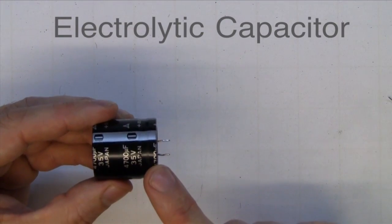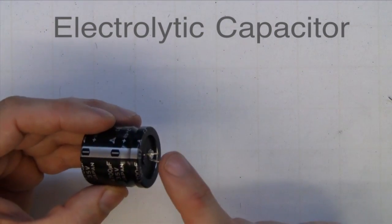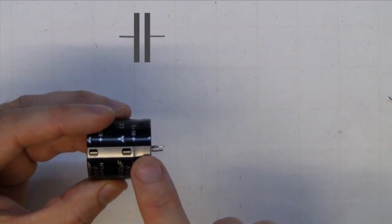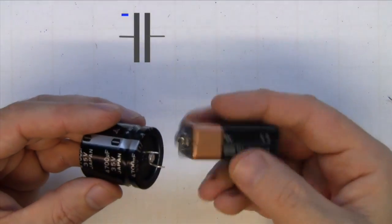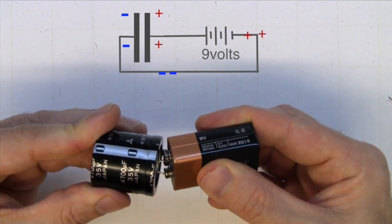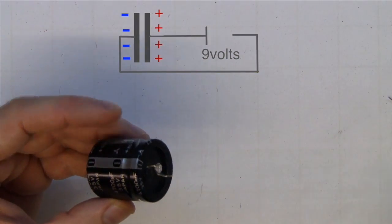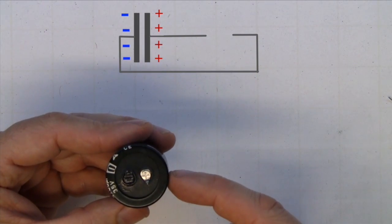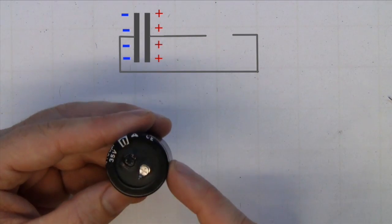This is an electrolytic capacitor and these are normally polarised so it will have the negative symbol running down one side. If I charge it with this 9 volt battery, just hold it on there for a few seconds. Now there is a charge of electrons on one plate and a deficit of electrons on the other plate.